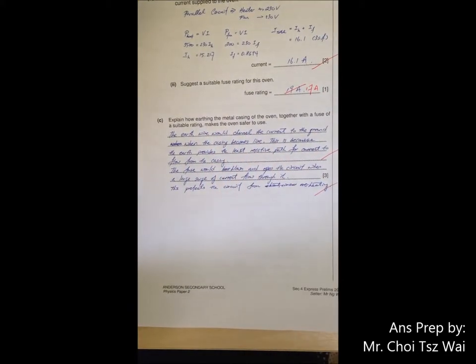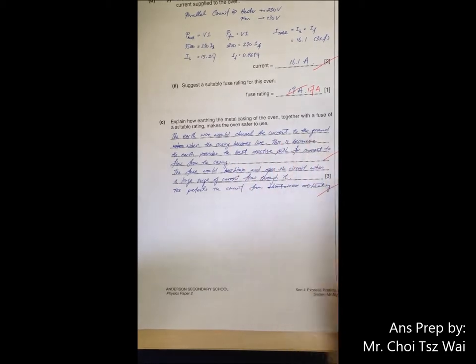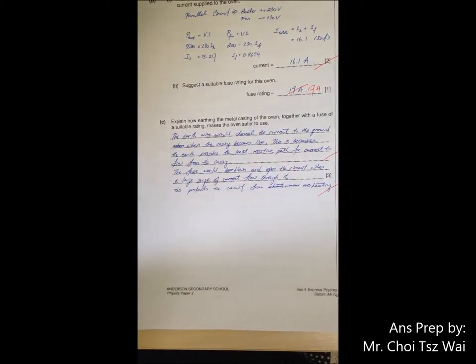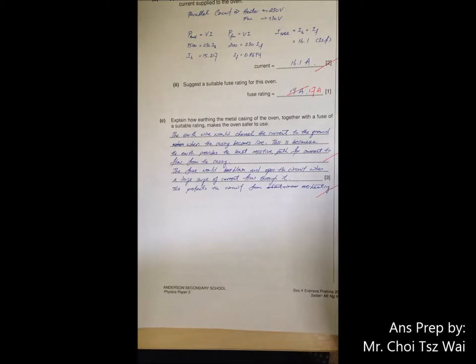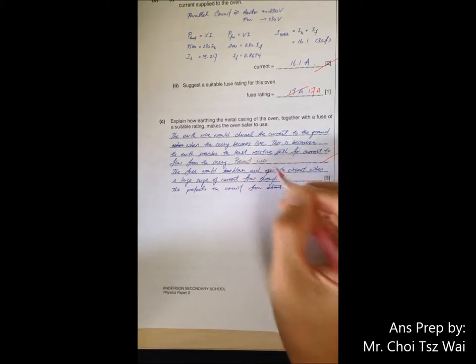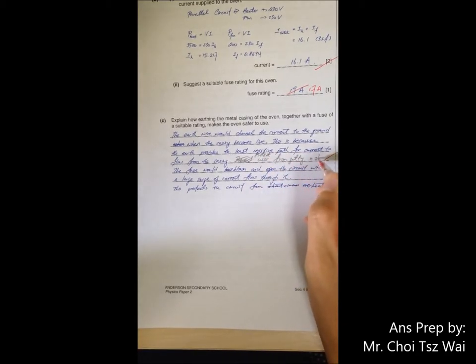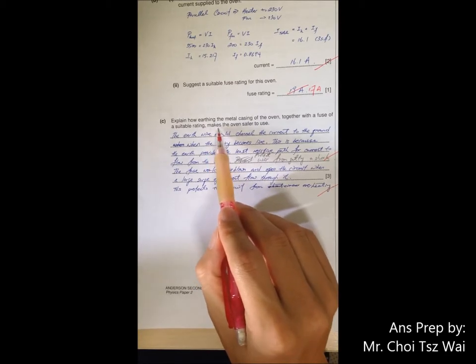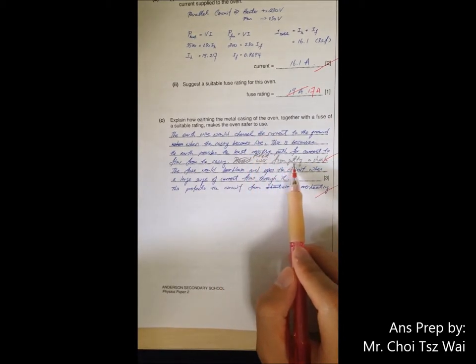How the earth wire and the fuse is going to protect the user. So basically, the earth wire will channel the current to the ground if the casing becomes live. And that is because, because you are asked to explain, so you have to explain it. So this is because the earth wire give the least resistive path for the current to flow from the casing. And then please remember to make reference to the user. So protects the user from getting a shock. You have to make this reference because the question context is, how does it make the oven safer to use? So that's why you need to make reference to the impact on the user.